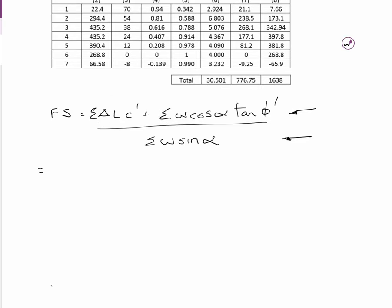So we'll go through and calculate it out. The sum of delta L becomes 30.501 times C prime which is 20 kilopascals given to you at the start. Plus the sum of W cos alpha is 1638 times tan 20 phi prime given to you at the start again. All divided by the sum of W sin alpha is 776.75.